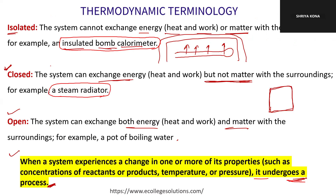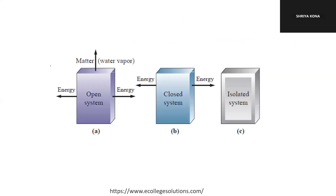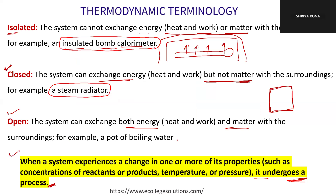Thermodynamic terminology: an isolated system has no exchange of matter or energy with surroundings. A closed system allows energy exchange but not matter. An open system allows both matter and energy exchange. An example of an isolated system is an insulated bomb calorimeter; a closed system is a steam radiator; and an open system is an open container. When a system experiences a change in properties, some process involving transfer of heat has taken place.